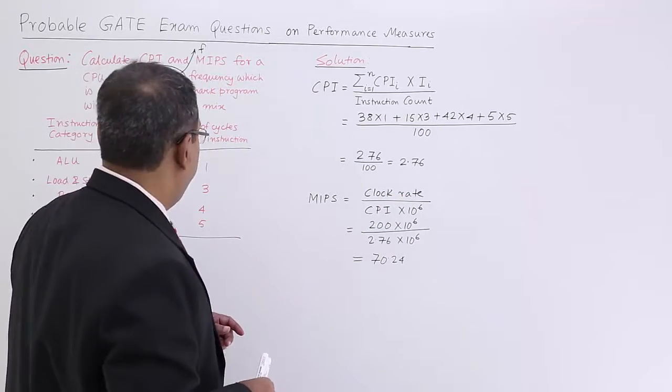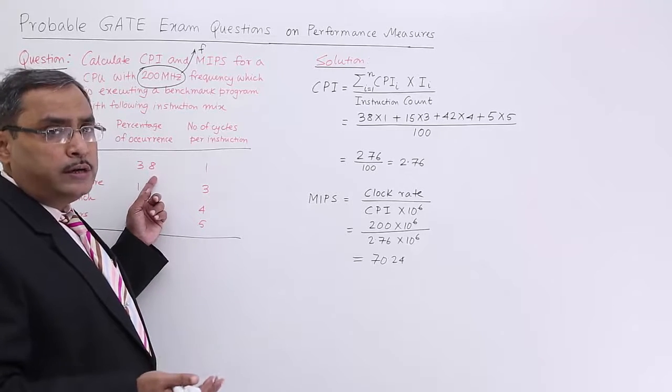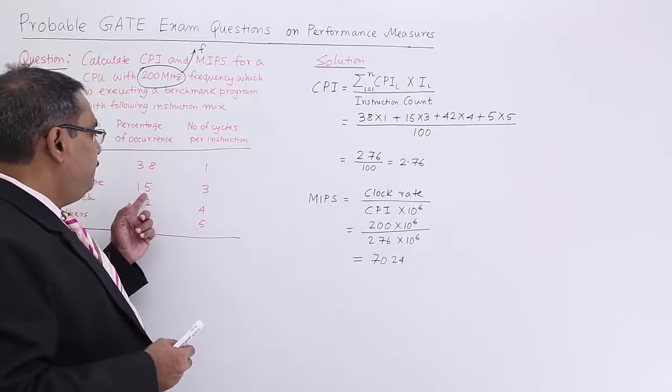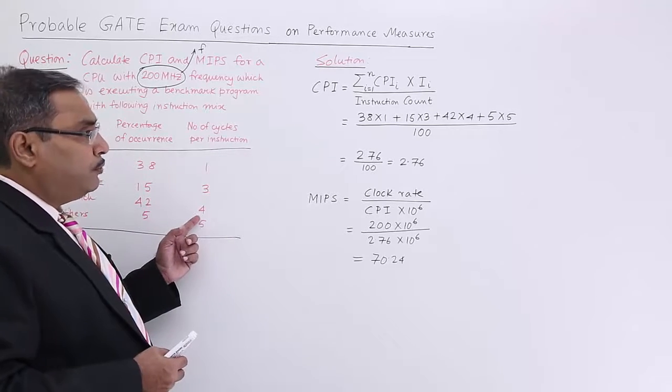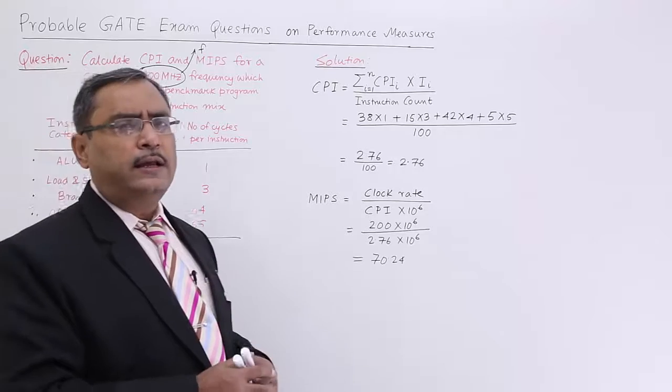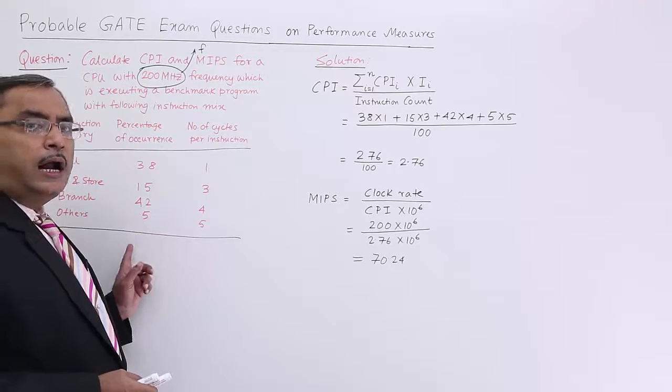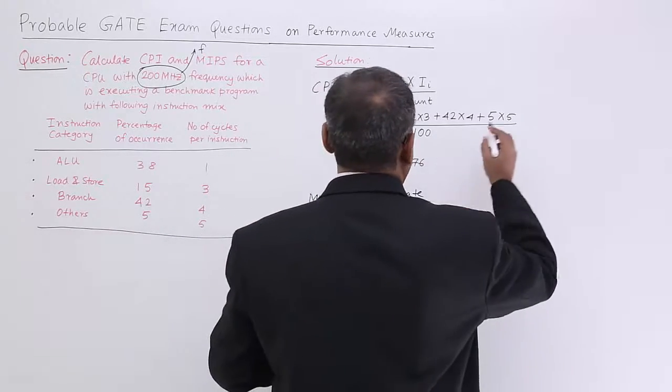Now you see we are having here 38 percentage. Out of 100, 38 number of instructions with CPI 1, so 38 into 1, 15 into 3, 42 into 4, and 5 into 5. This is the total cycle count by how many instructions - 100.